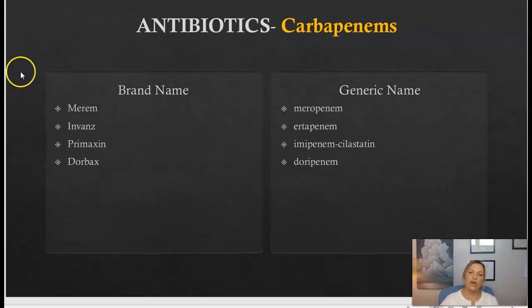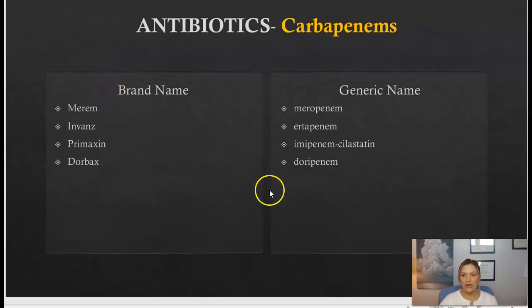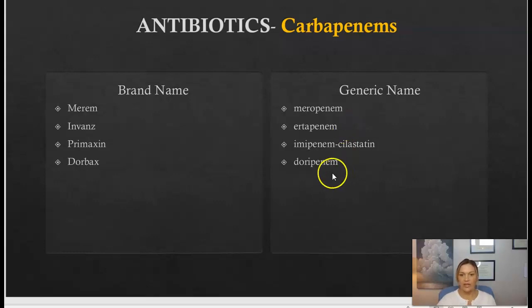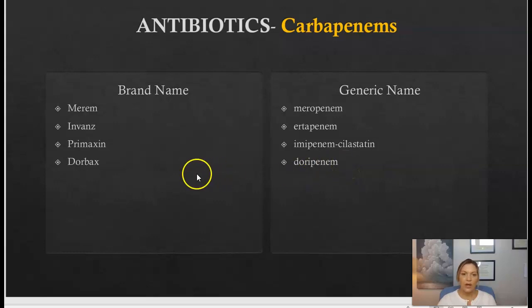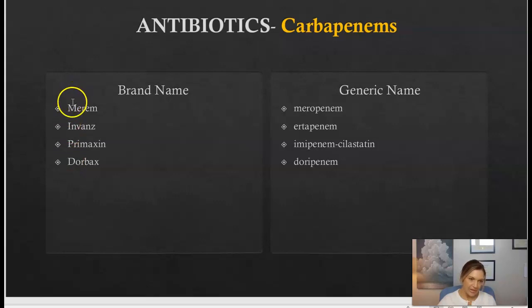Some common carbapenem names include meropenem, which is a very popular one, and doripenem, which is also commonly given. A quick note on pharmacology naming: brand names always start with a capital letter, and generic names always begin with a lowercase letter.